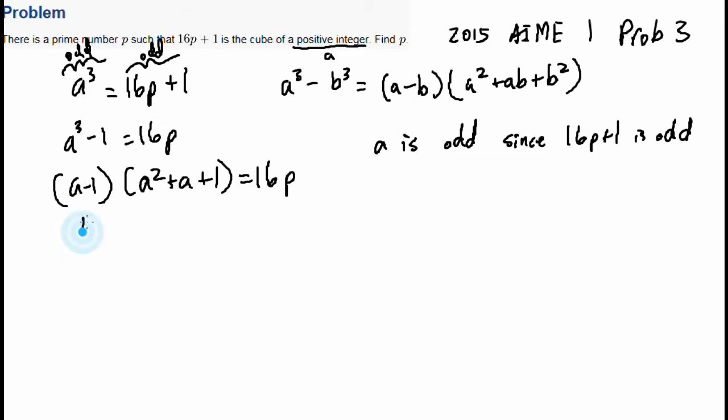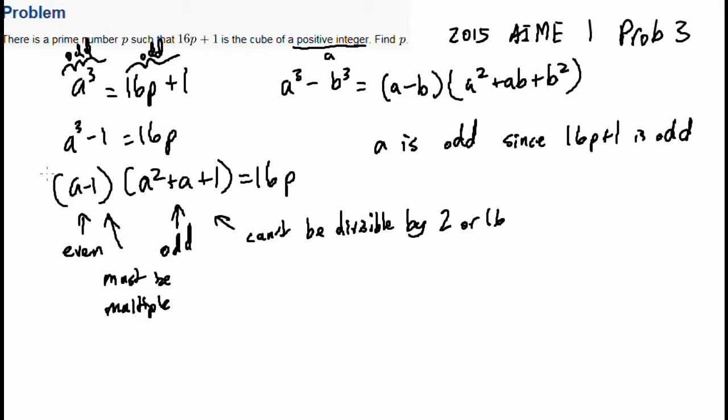So a is odd. That's important actually, because if a is odd, that means odd minus 1 is even. And of course, odd squared, which is odd plus odd plus 1. So odd plus odd plus odd, that sounds like odd. So what does this mean? It means that this side can't be divisible by 2 or 16. So we know that since one of the factors of this number is 16, this must be a multiple of 16. Since a squared plus a plus 1 isn't a multiple of 16, a minus 1 must be a multiple of 16.